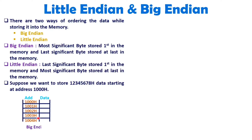Now, here I'm dealing with memory as per Big Endian to store the data. As I have said, the most significant byte should get stored first. With this data, the most significant byte is 12 hex. So 12 hex should get stored at the starting address, that is 1000 hex. Then, as address is increasing, at last we are storing the least significant byte, that is 78 hex, stored at 1003 hex.